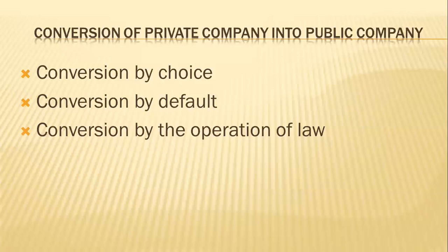The court, if satisfied that the failure to comply with the conditions is not willful or that it is just and equitable to grant relief, may do so under Section 43. Point three — conversion by the operation of law: private companies are exempted from the operation of several provisions of the act and enjoy certain privileges on the ground that they are family concerns in which the public is not directly interested. The law tries to tackle the problem by creating another type of company.